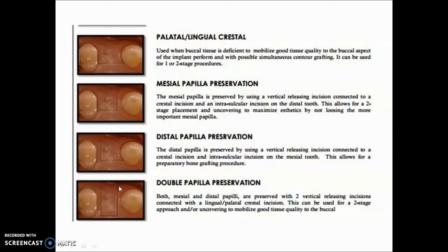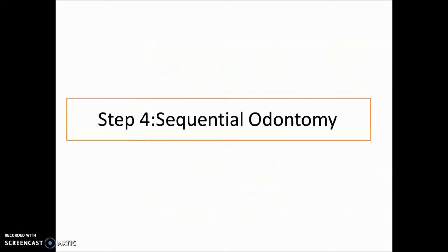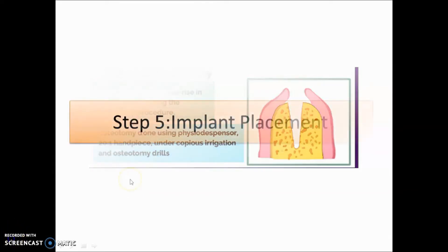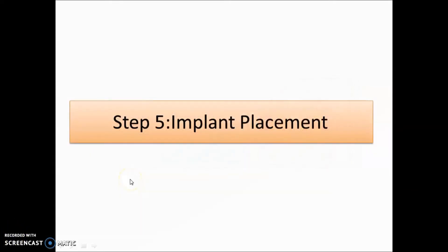Step four is sequential osteotomy, performed to decrease the rise in temperature during the osteotomy procedure. It is done using a physio-dispense and a 20:1 handpiece under copious irrigation with osteotomy drills.